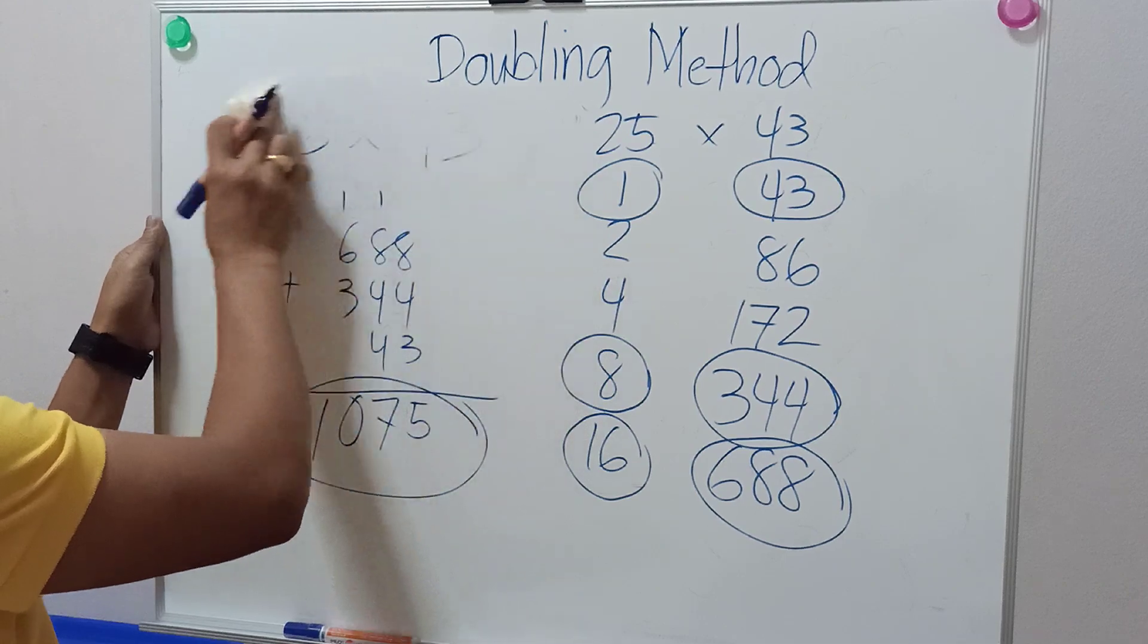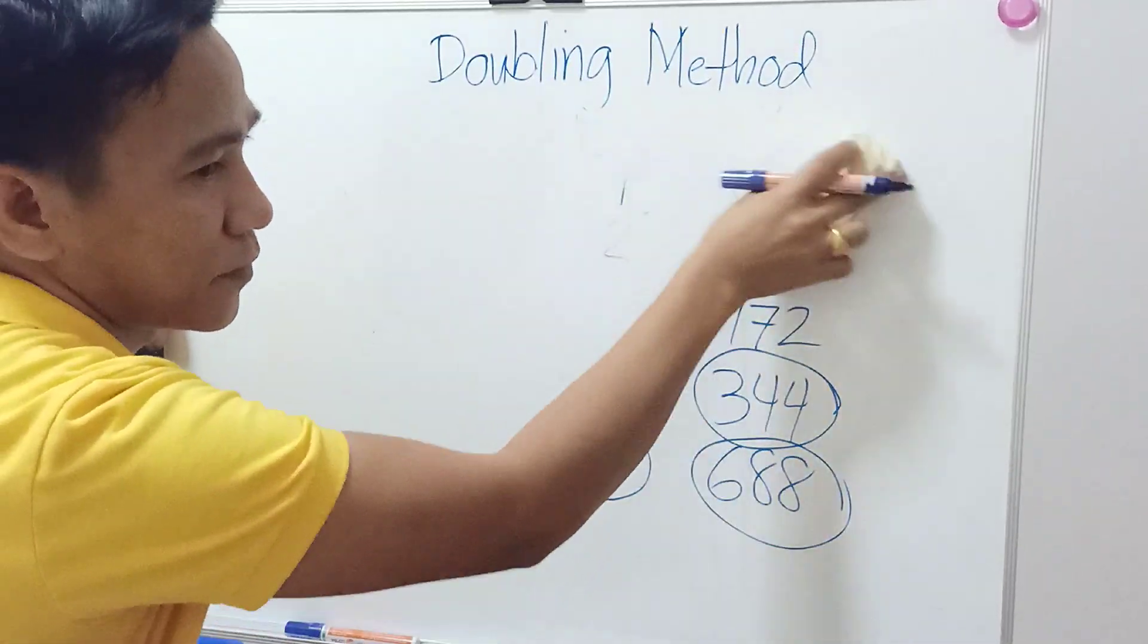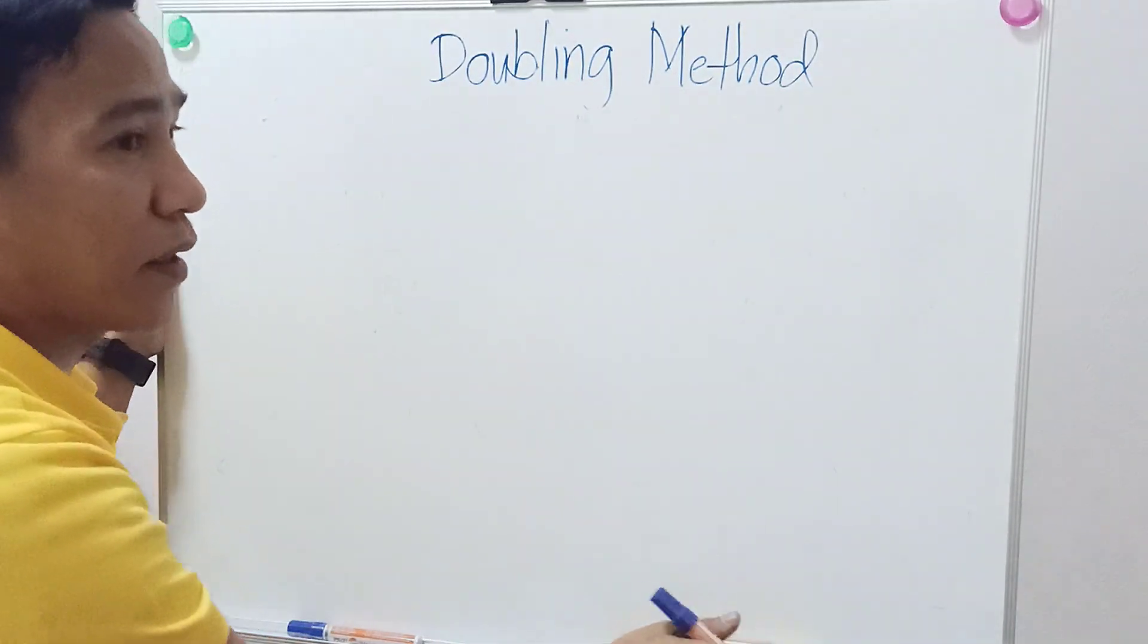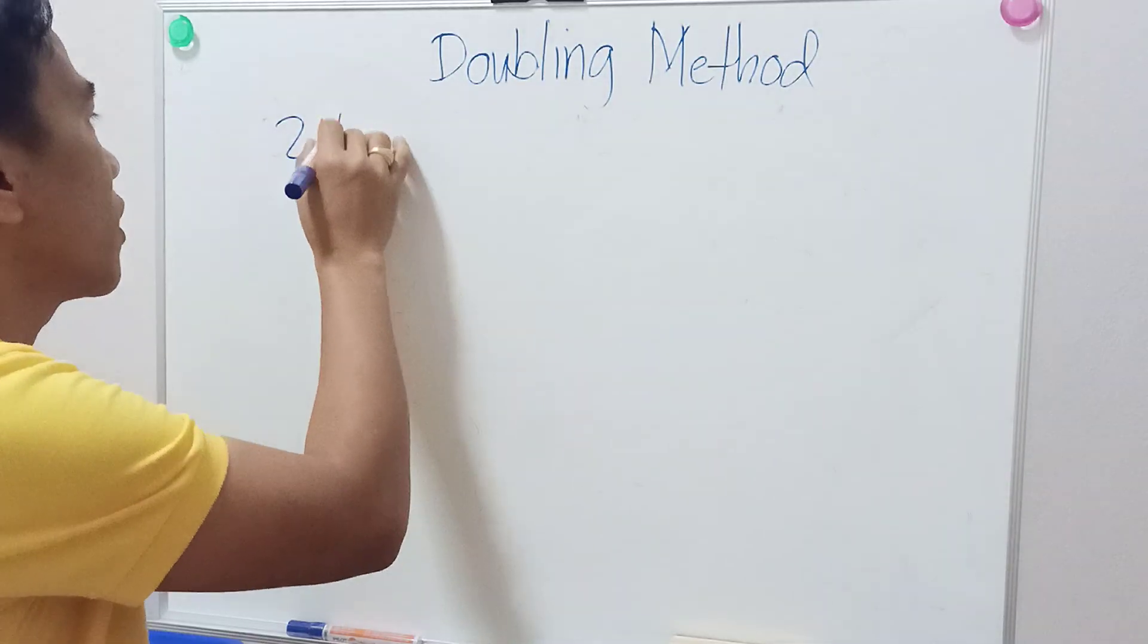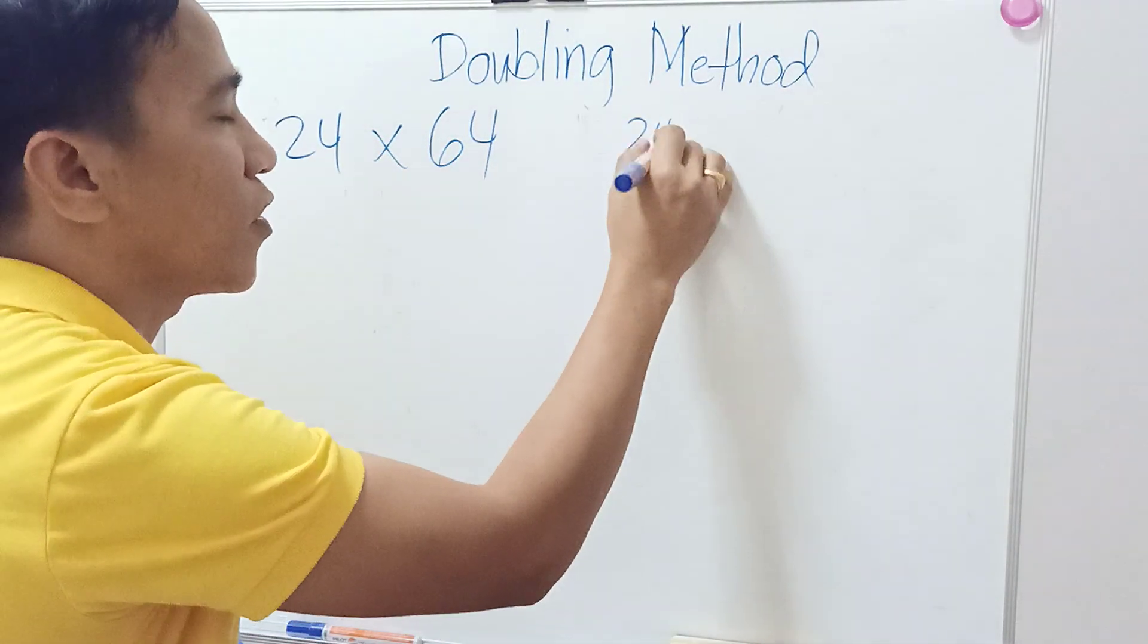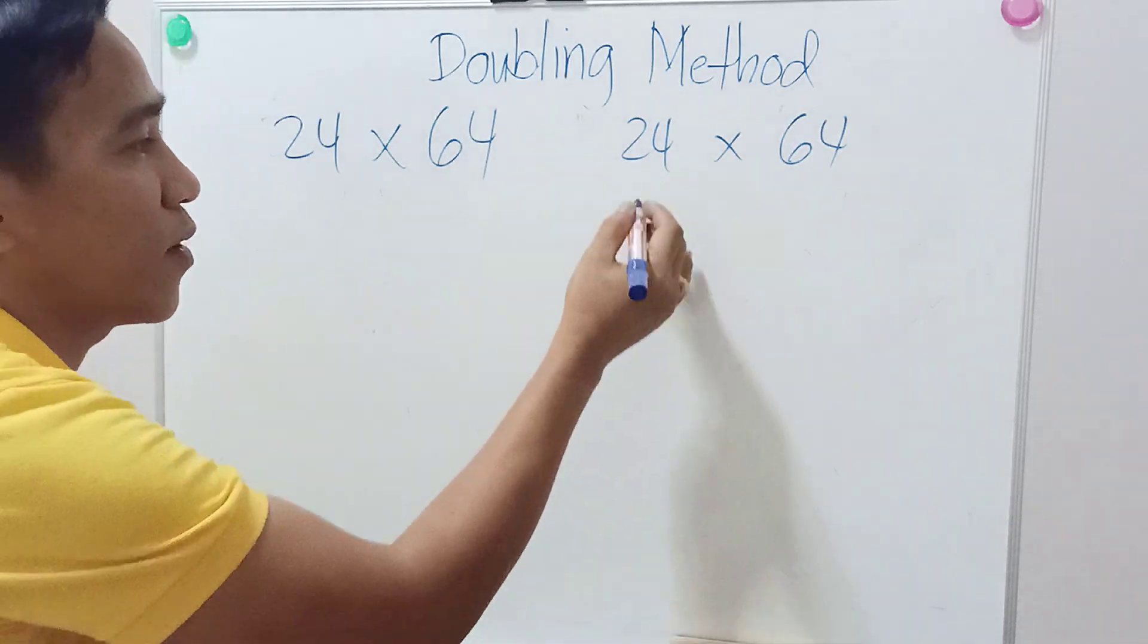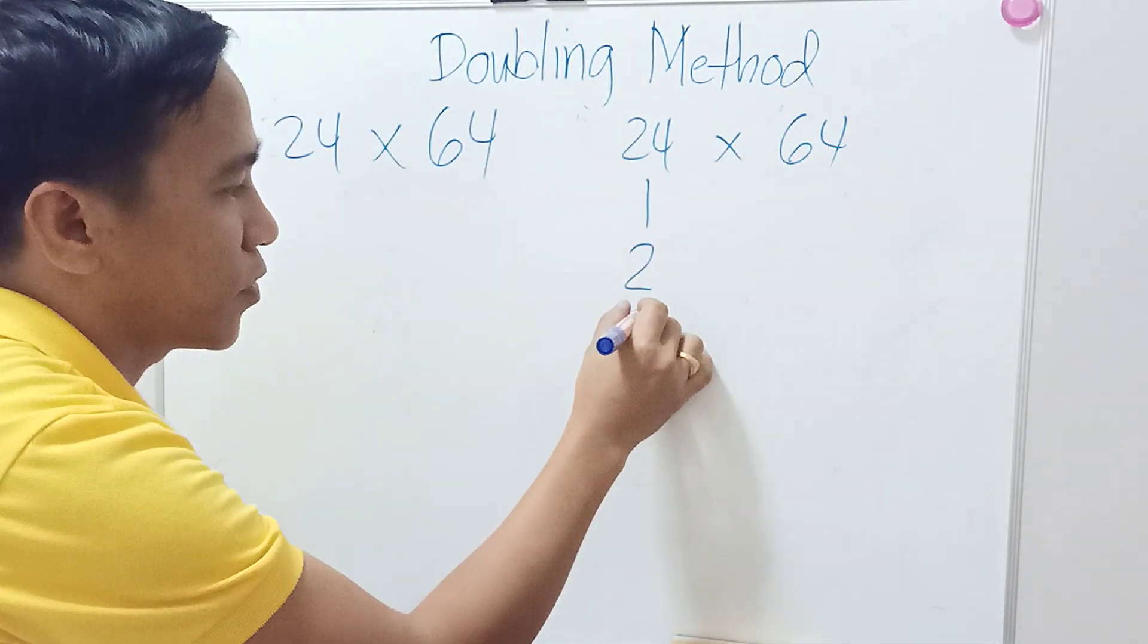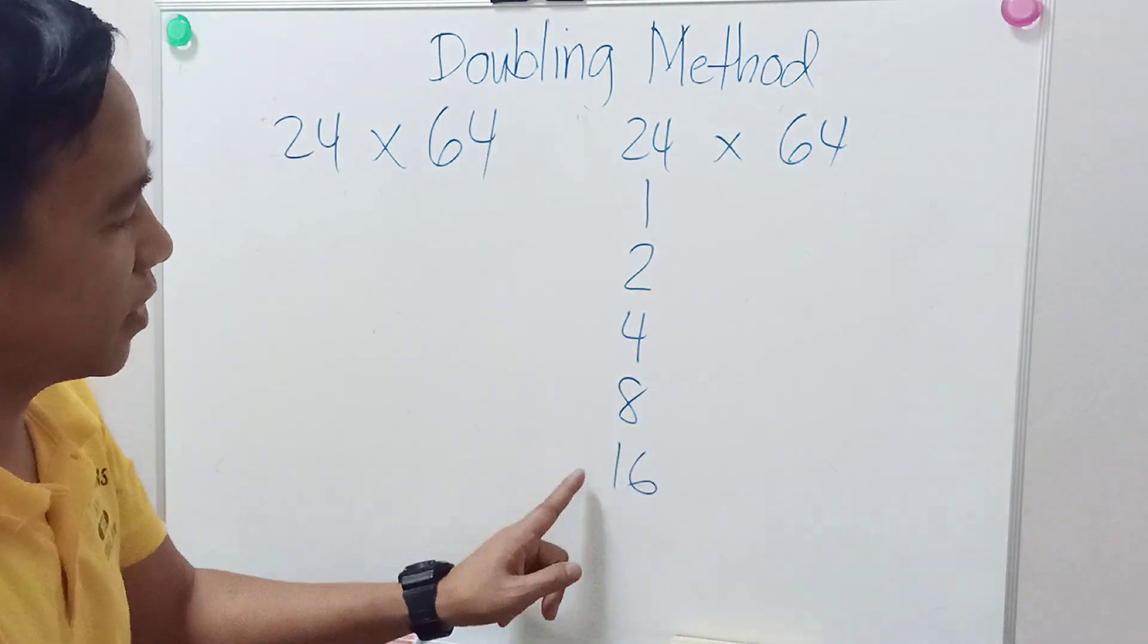Let's have another example for the last time. Let's say 24 times 64. Again, you start at 1, make it double: 2, double of 2 is 4, double of 4 is 8, double of 8 is 16.